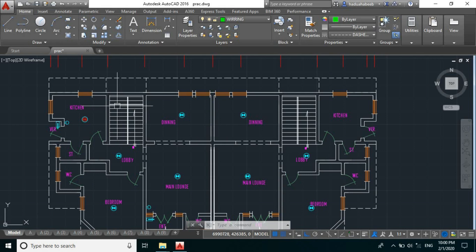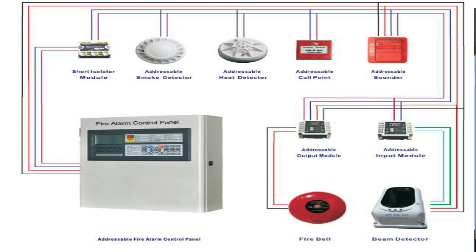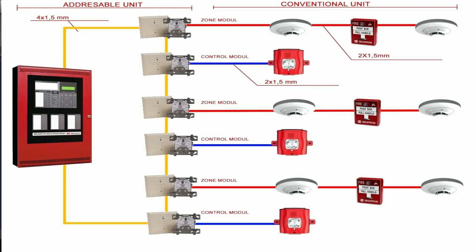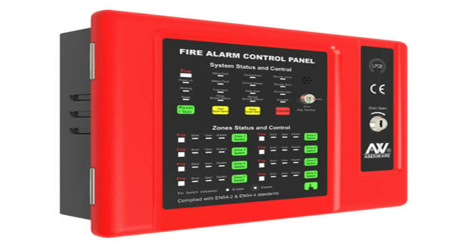As I've already explained, we have three types of fire alarm control panel: we have the conventional panel, we have the addressable fire alarm control panel, and the digital addressable fire alarm control panel.